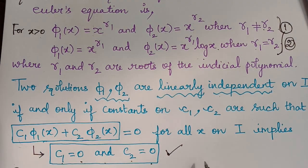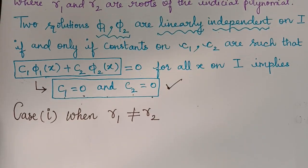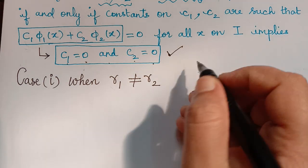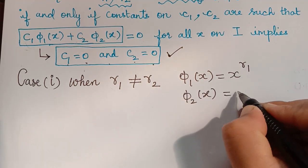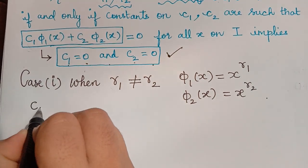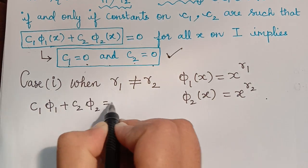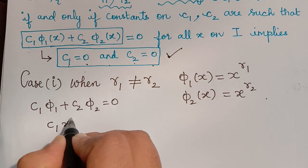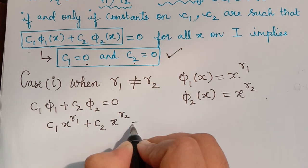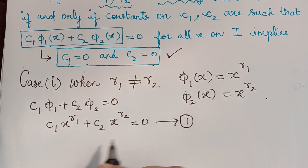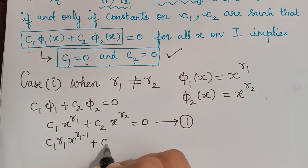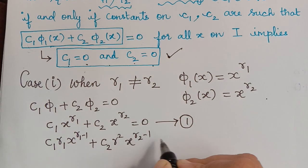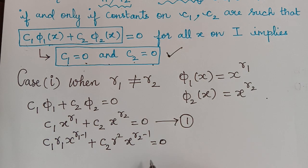Case 1: r₁ ≠ r₂. We know that φ₁(x) = x^r₁ and φ₂(x) = x^r₂. If we consider c₁φ₁ + c₂φ₂ = 0, then we have c₁x^r₁ + c₂x^r₂ = 0 — call this Equation 1. On differentiating Equation 1 we get c₁r₁x^(r₁−1) + c₂r₂x^(r₂−1) = 0.